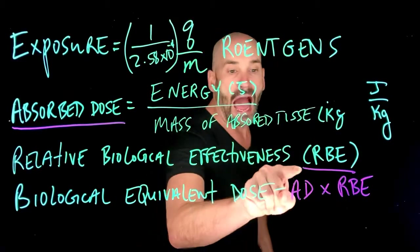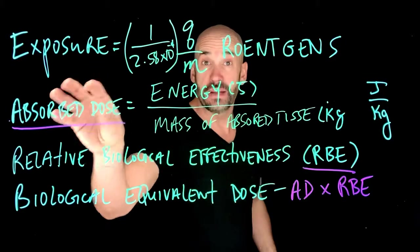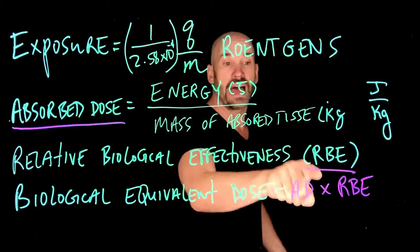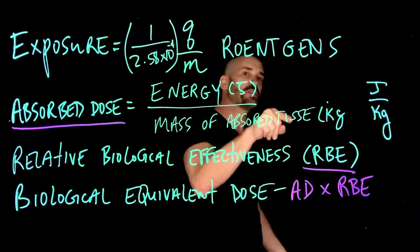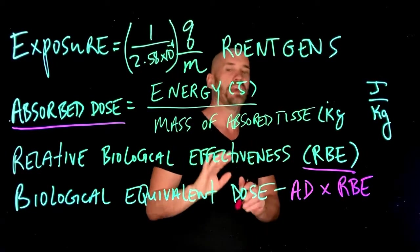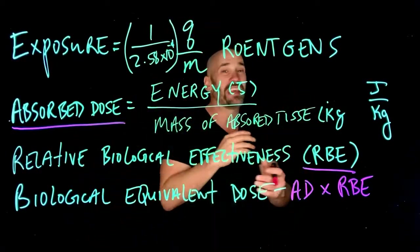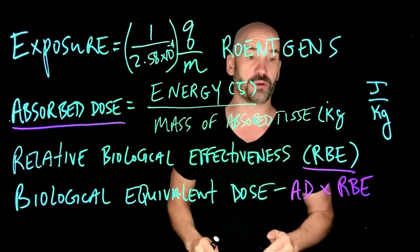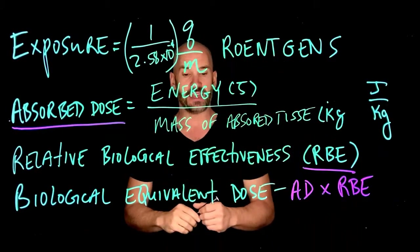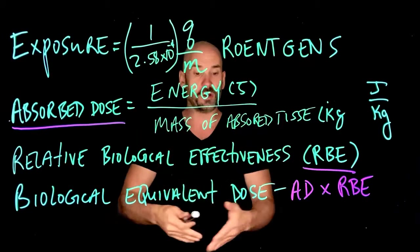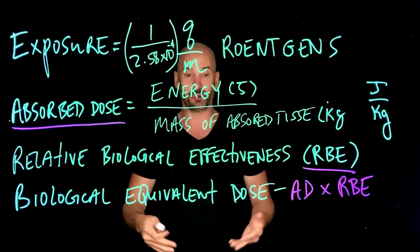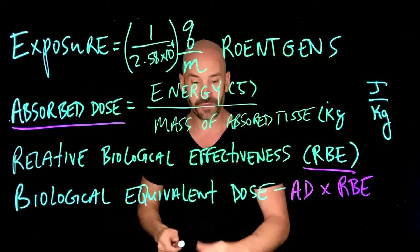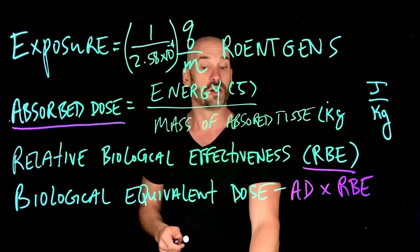The biological equivalent dose is the absorbed dose, I'm just going to call that AD, times the relative biological effectiveness. In other words, this is saying, how much radiation hit me? That's the absorbed dose. Times how relatively harmful is that specific kind of radiation? In order to really determine how much you're going to get hurt by a certain amount of radiation, you have to know how much you absorbed and how harmful that specific radiation is. You multiply them together and you get the biological equivalent dose, which tells you how much danger you're actually in as a result of that radiation.